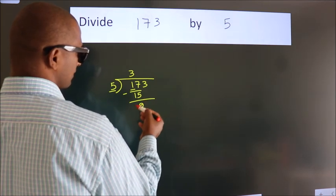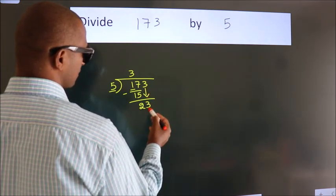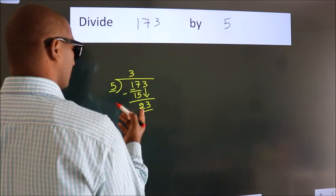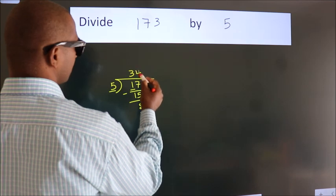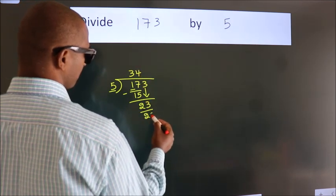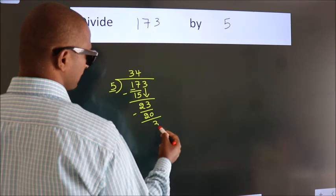After this, bring down the beside number. So 3 down. So 23. A number close to 23 in the 5 table is 5 fours, 20. Now we subtract. We get 3.